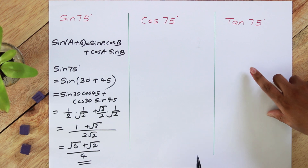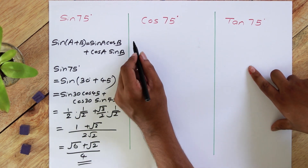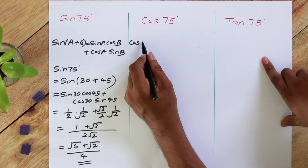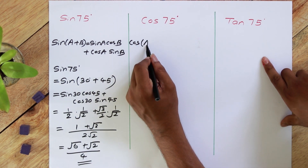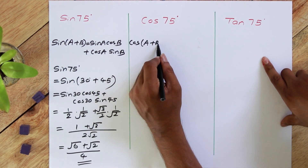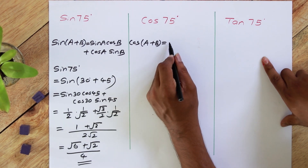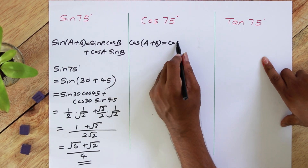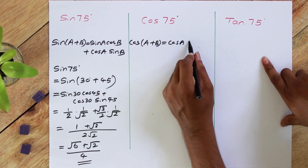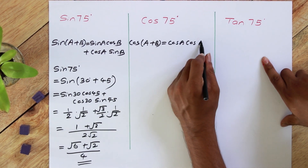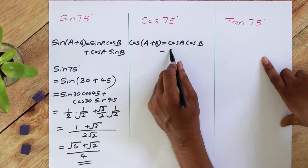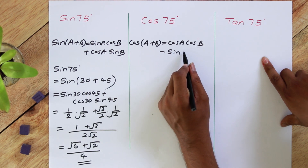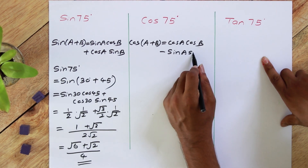Moving on to cos 75. We learned the sum identity: cos(A+B) can be written as cos A cos B minus sin A sin B.